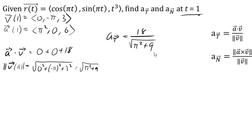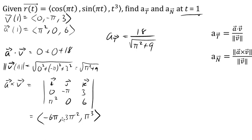Now for the normal direction, we're gonna need the cross product of a and v. And so for that, we can go ahead and calculate out the cross product. So we got 0, negative pi, 3, pi squared, 0, and 6 here. And we can calculate that out. And calculating out the cross product gives us this. Now we need the magnitude of that cross product.